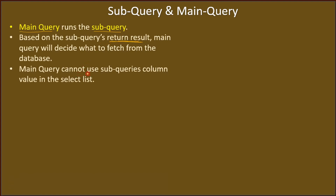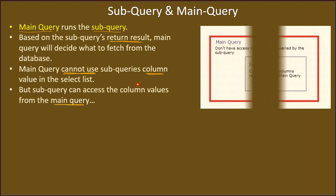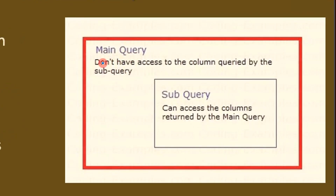The main query cannot use a subquery's column value in the select list. Since the main query is what runs the subquery, the main query cannot access columns from the subquery. However, the subquery can access column values from the main query and fetch values based on the main query's current row.